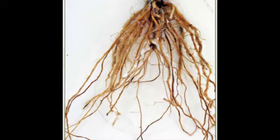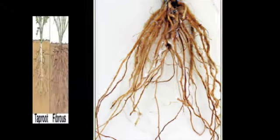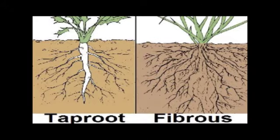The root is the underground part of the plant and it becomes thick and woody with a corky outer layer as it grows. Now, there are two types of roots: tap roots and fibrous roots.